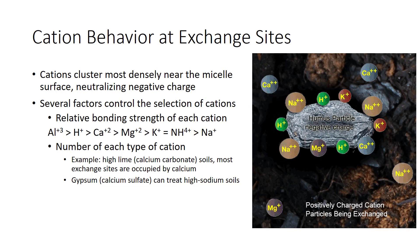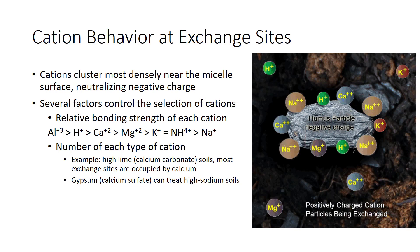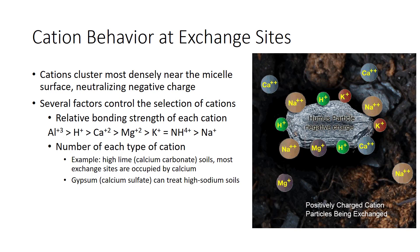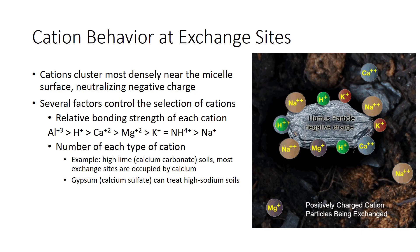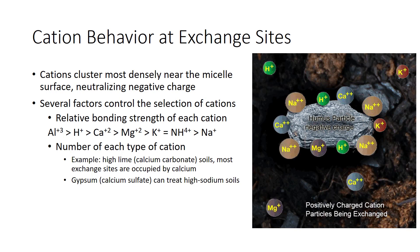If two cations are present in the soil in equal numbers, then the one that bonds most tightly to exchange sites will tend to be found on the micelle. The most strongly adsorbed cation is aluminum, followed in decreasing order by hydrogen, calcium, magnesium, potassium, ammonium, and lastly sodium. Assume that a soil has equal numbers of calcium and sodium ions. Calcium tends to dominate exchange sites because it adsorbs more strongly on the micelle. Sodium tends to leach out of the soil solution. The second controlling factor is mass action — the greater the number of an ion in the soil, the more exchange sites it will occupy.